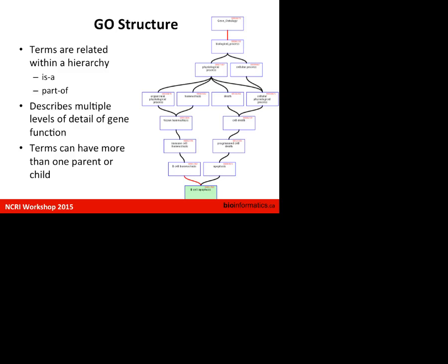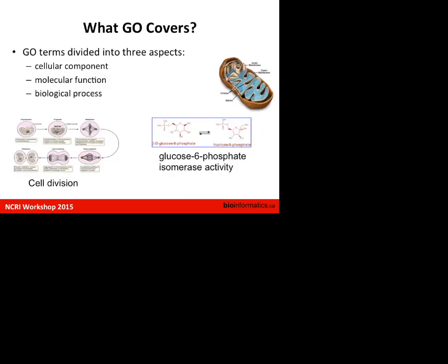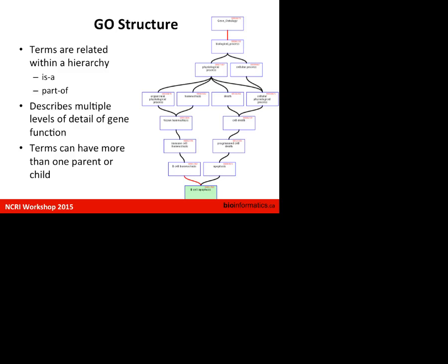As an example of the GO hierarchy: cell death is a parent of programmed cell death, programmed cell death is a parent of apoptosis, and apoptosis is a parent of B-cell apoptosis — all belonging to the biological processes category. It describes multiple levels of detail of gene function, and different terms can have different numbers of parents and children.